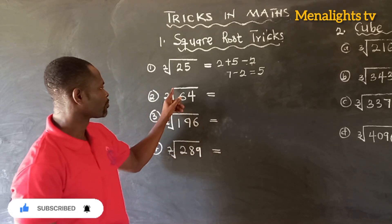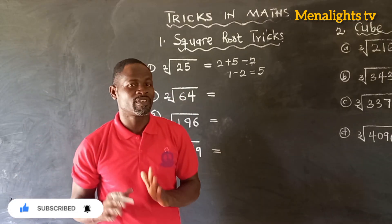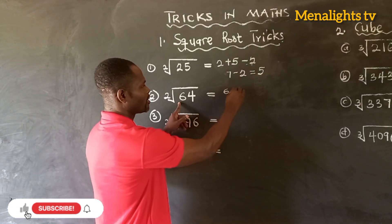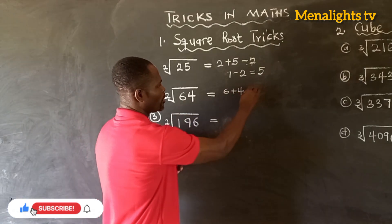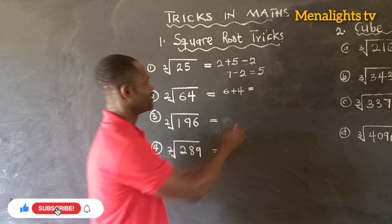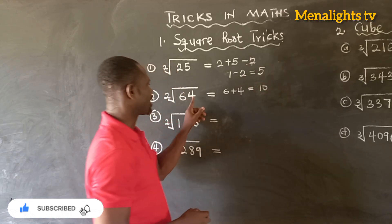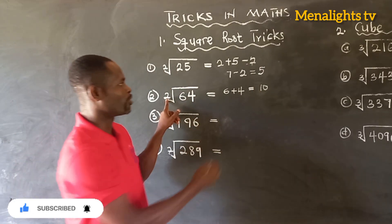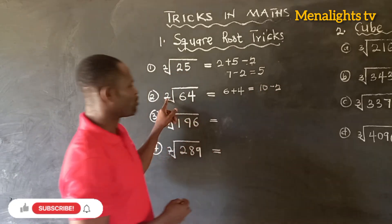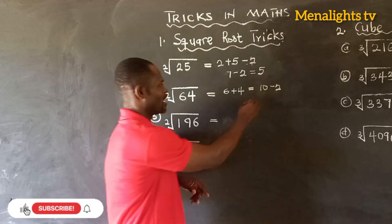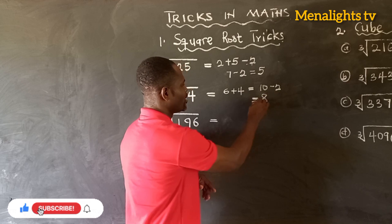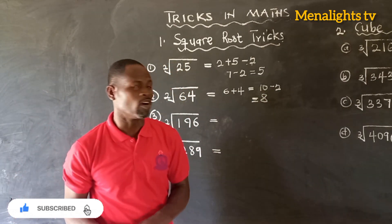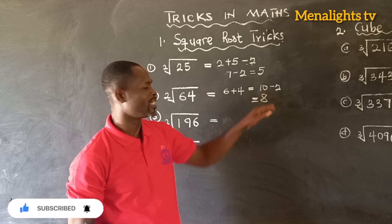Now let's turn to the square root of 64. So what we have to do is we add 6 plus 4, which is going to give us 10. Then we deduct the 2 from it — so 10 minus 2 will give us 8, which means that the square root of 64 is equal to 8.